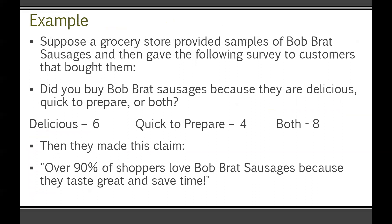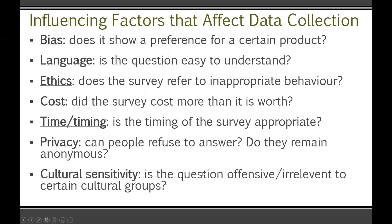Here's another question, a little bit less self-centered. Suppose a grocery store provided samples of Bob Bratt sausages and then gave the following survey to customers that bought them. The question is: did you buy Bob Bratt sausages because they are delicious, quick to prepare, or both? The results were six people said delicious, four said quick to prepare, and eight — the biggest group — said both. Then Bob Bratt sausages made this claim: over 90% of shoppers love Bob Bratt sausages because they taste great and save time. There are clearly some issues with that.